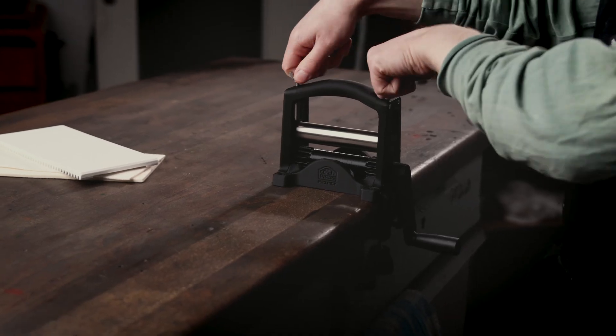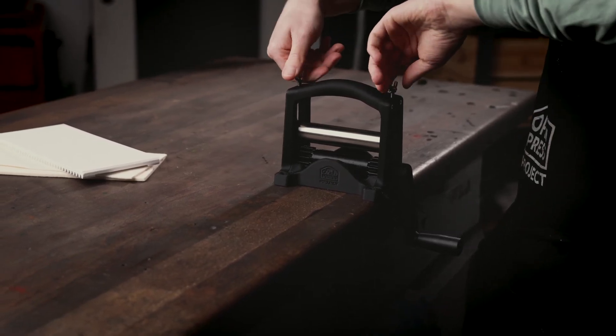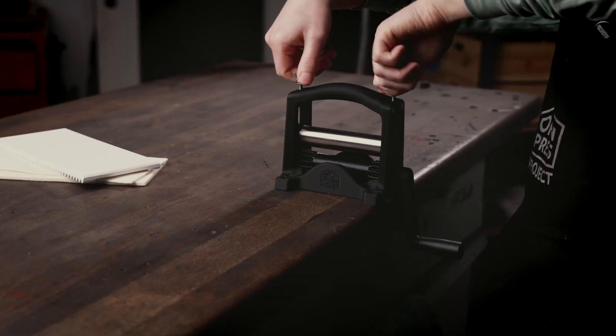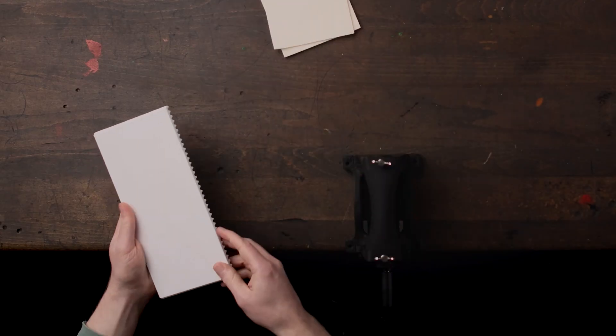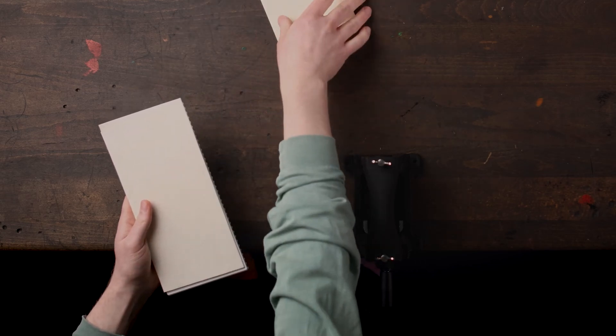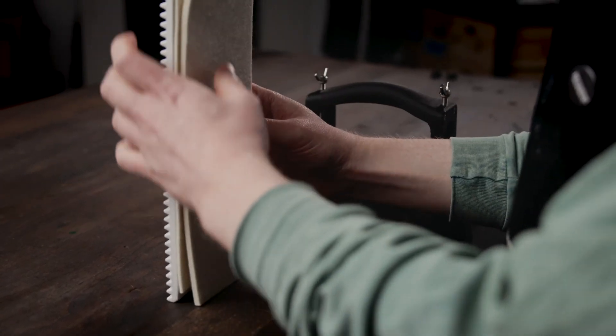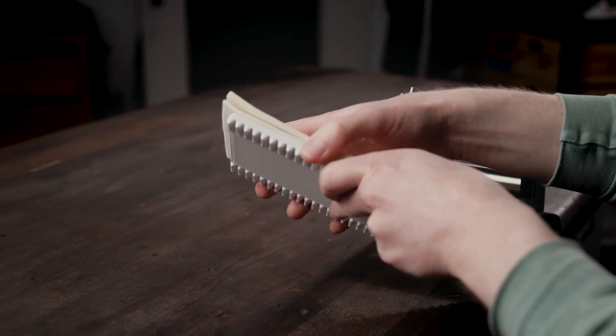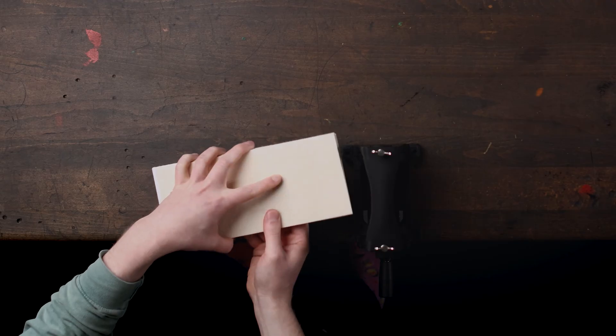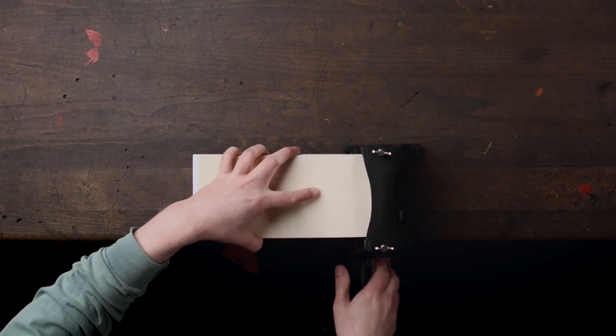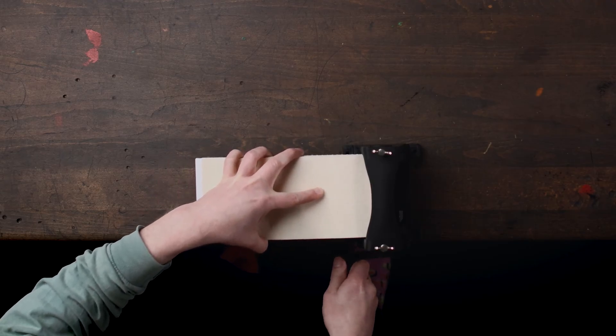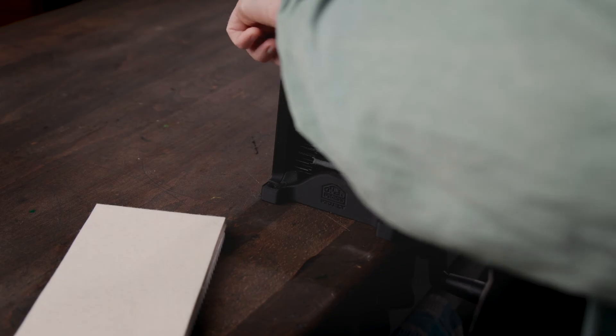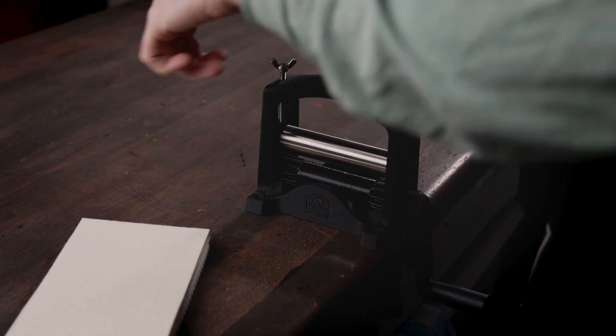Once you've done that, you're going to need to release some pressure by turning these wing bolts counterclockwise to make some room for the press bed that we are inserting now. When you are using the blankets, I highly recommend having them overlap a little bit like this. That's going to make it a lot easier to insert and not have the felt slip on the press bed. If you're having trouble inserting your bed like I have right now, you're just going to release some more pressure and do that again until it works.